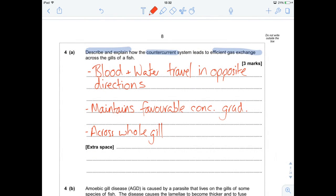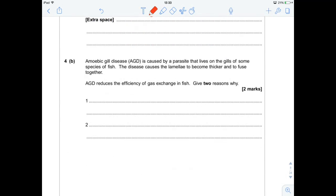What else have we got here? Amiobic gill disease, or AGD for you fish disease enthusiasts, is caused by a parasite that lives on the gills of some species of fish. And this causes the gill lamellae to become thicker and fused together. This reduces the efficiency of gas exchange. Give two reasons why. Okay, so it's thicker.